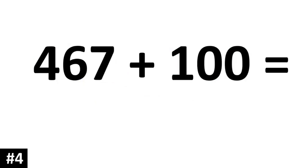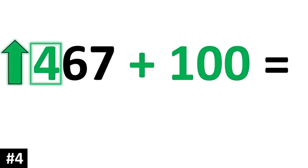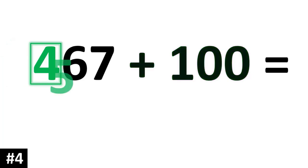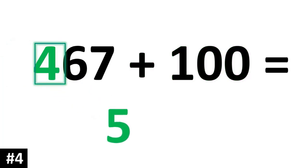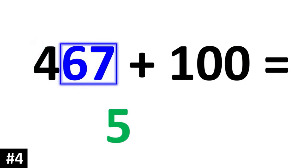467 plus 100. First we find the hundreds digit, which is a 4, and we go up by 1. So the 4 becomes a 5. The other numbers stay the same.